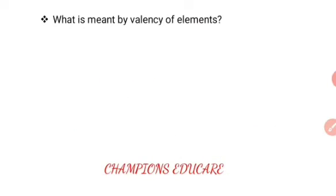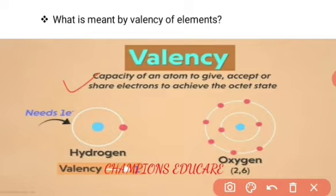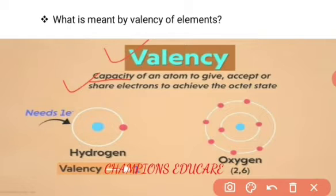The second question they have asked is: what is meant by valency of elements? Valency is a concept of atoms. Valency is the capacity of an atom to give, accept, or share electrons to achieve the octet state or stable state. Any atom, in order to become stable, has to donate, accept, or share electrons. This capacity of giving, accepting, and sharing electrons is called valency.